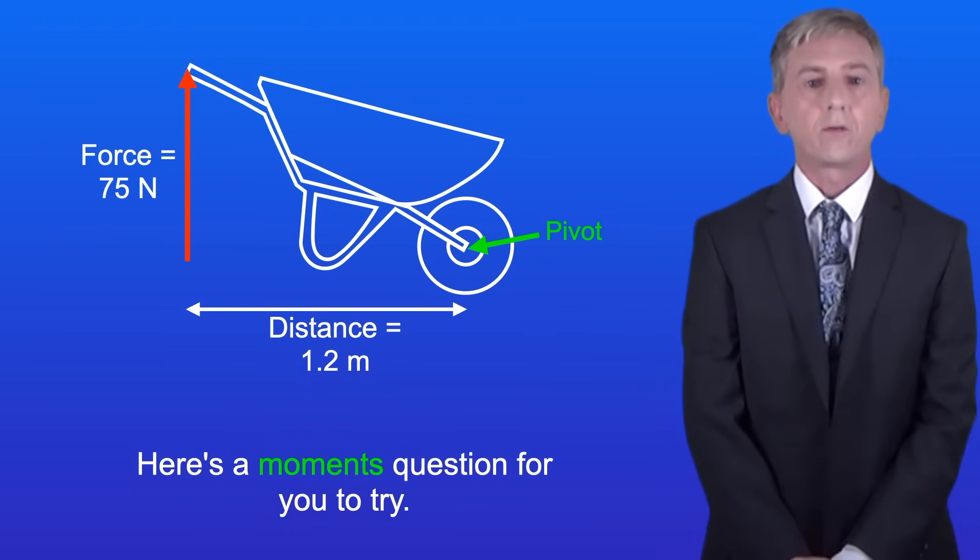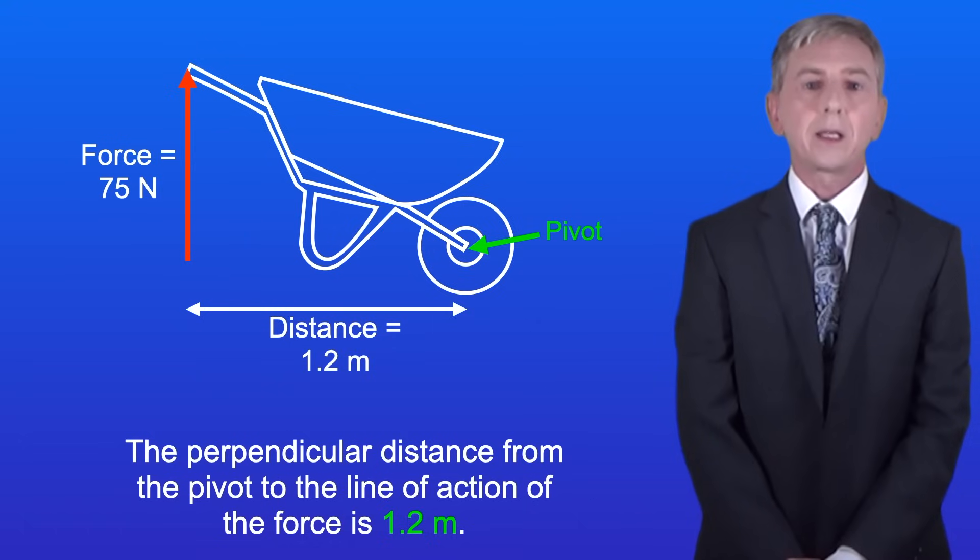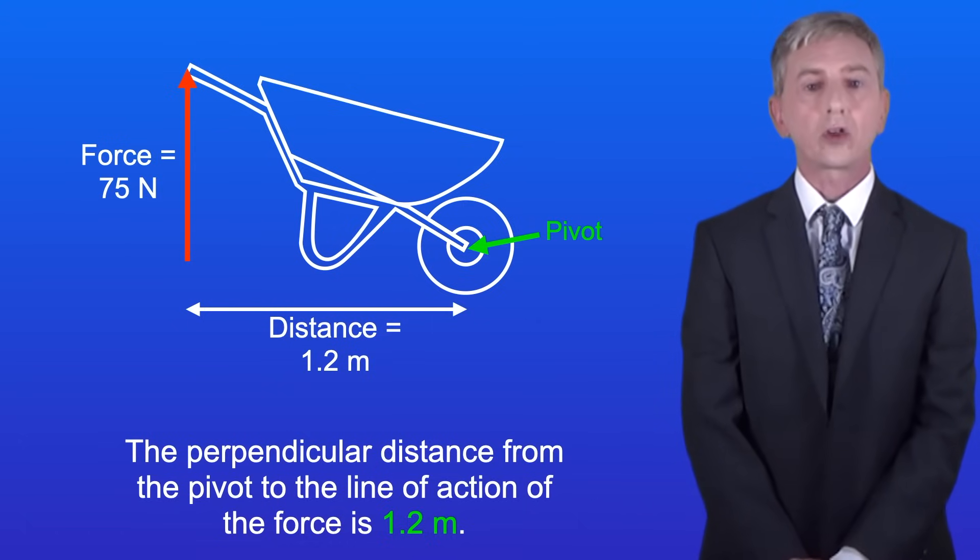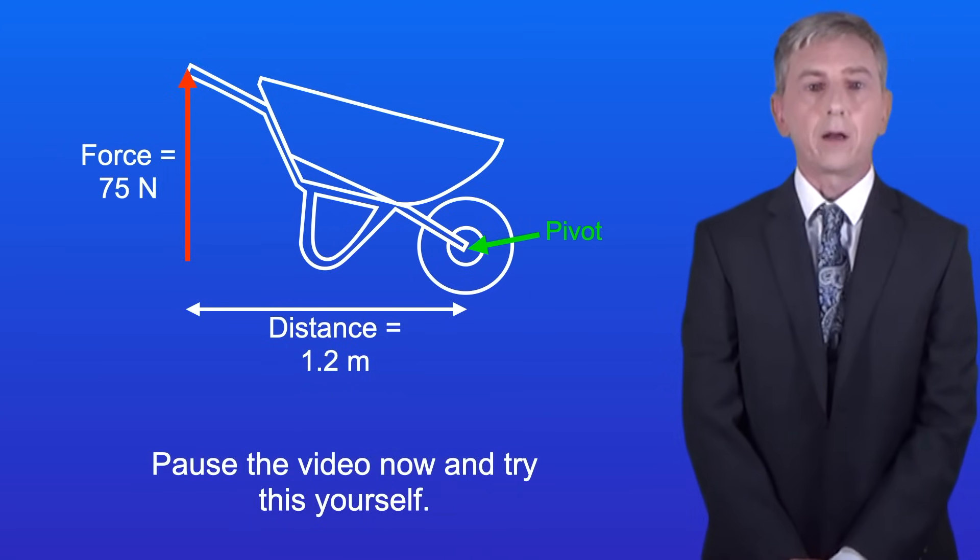Here's a moments question for you to try. A person is lifting a wheelbarrow with a force of 75 newtons. The perpendicular distance from the pivot to the line of action of the force is 1.2 meters. Calculate the moment produced by the force. So pause the video now and try this yourself.